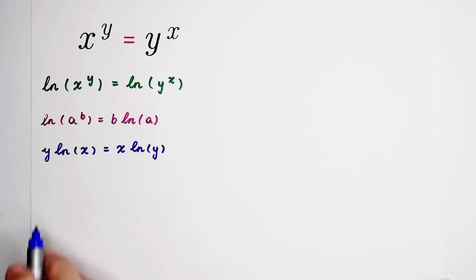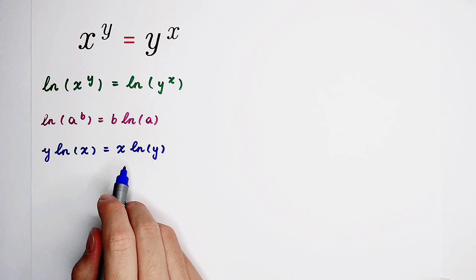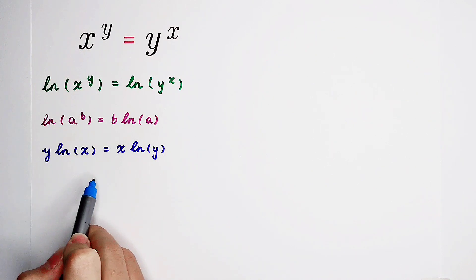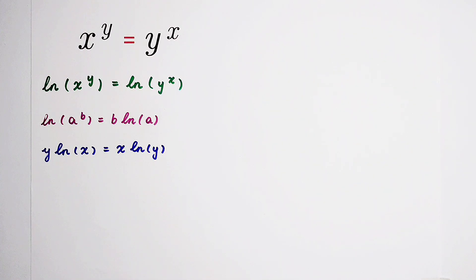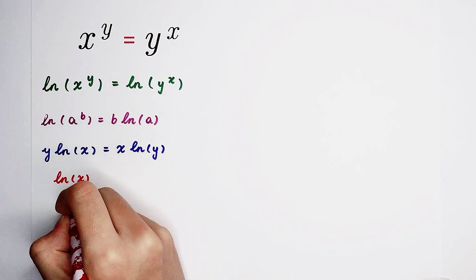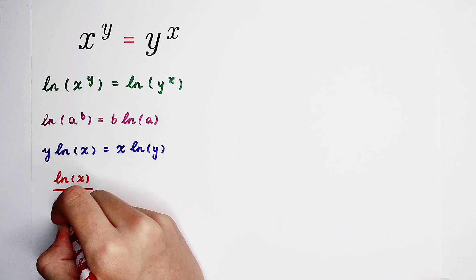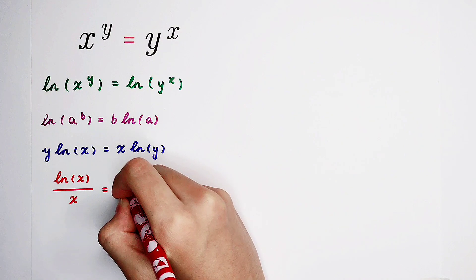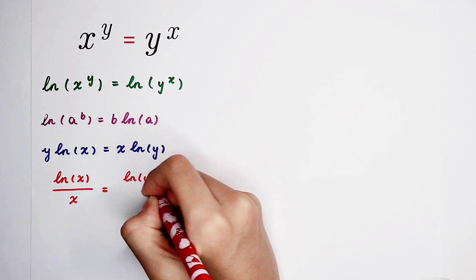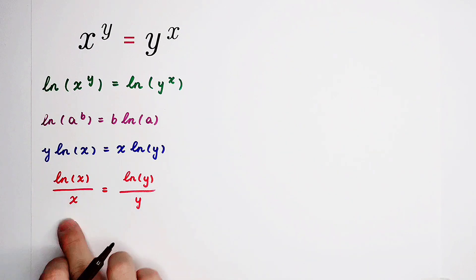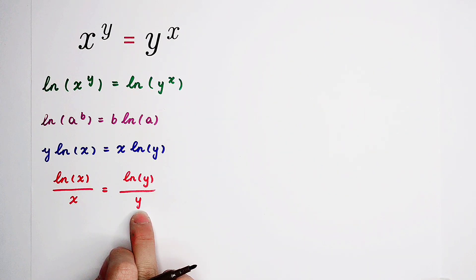So we have y times the natural log of x equals x times the natural log of y. If we divide both sides by x times y, the left-hand side becomes the natural log of x over x, and the right-hand side becomes the natural log of y over y. The left-hand side and right-hand side now have the same form.